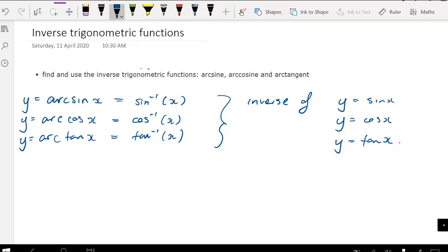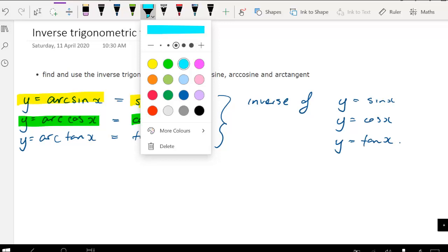The syllabus says we need to find and use the inverse trigonometric functions arcsine, arccosine, and arctangent. So y equals arcsine x is the same as sin to the negative 1 of x. We've got y equals arccos x, which is cos to the negative 1 of x, and y equals arc tan x, which is tan to the negative 1 of x.